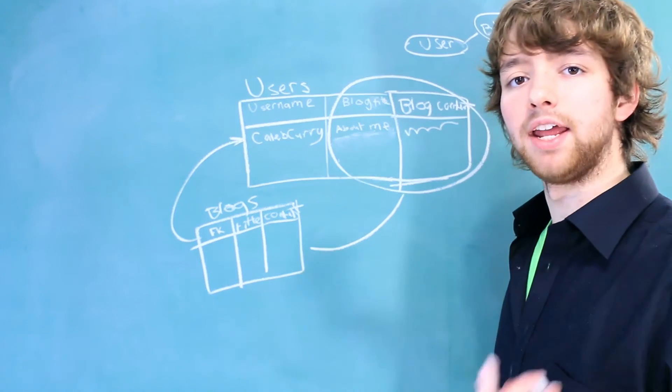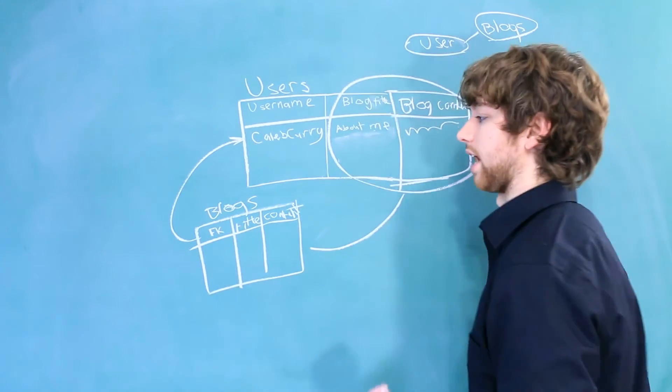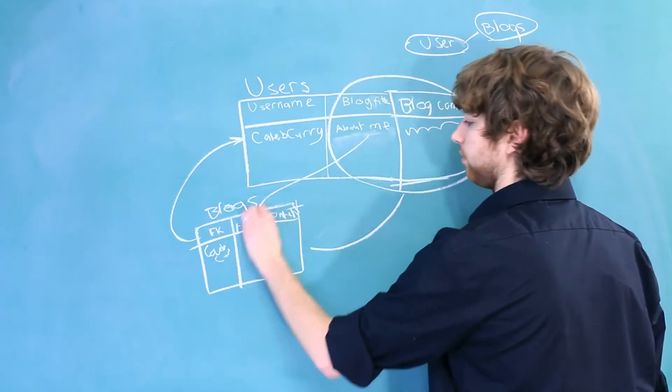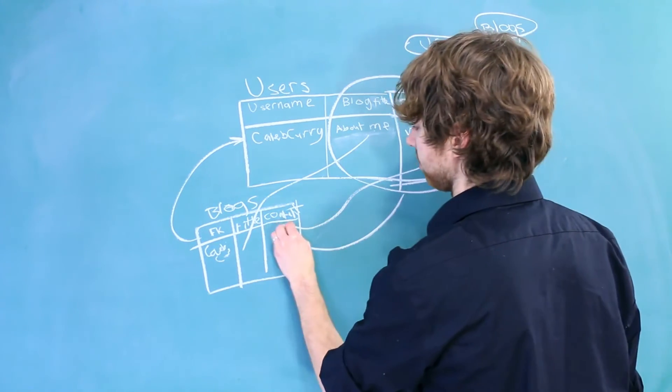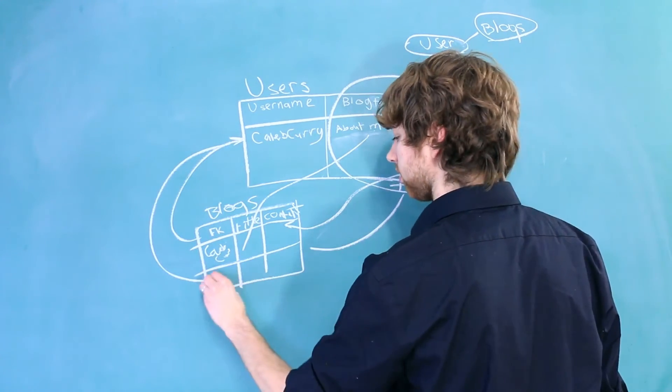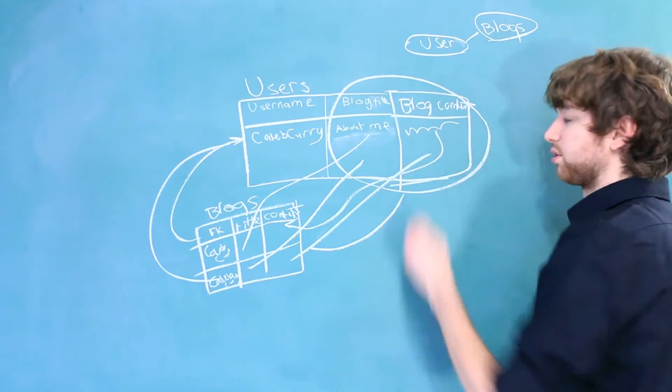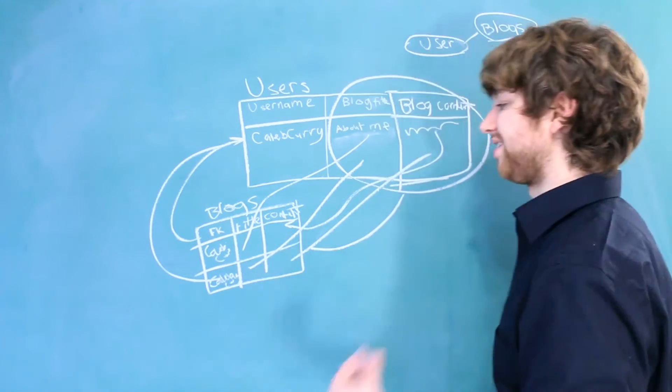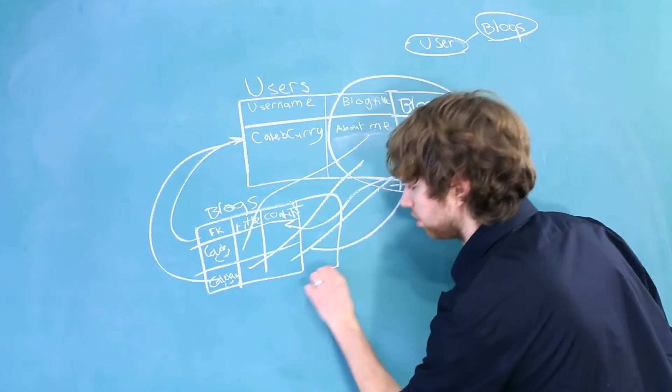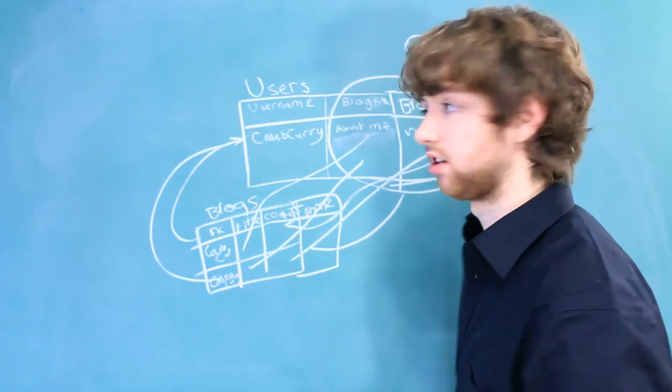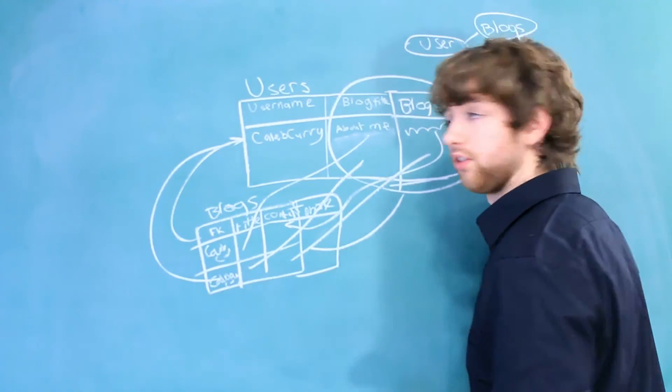And now if you needed to add another blog, you would just add a row. So we have the first row, Caleb Curry, and then the about me and the title, and then the blog content right here. And then when you need another one, you just add a row, another reference to Caleb Curry, another title, another blog content. As you can see, my drawing is awful. But in this situation, we don't have another column here that says phone, so we don't have redundant data.